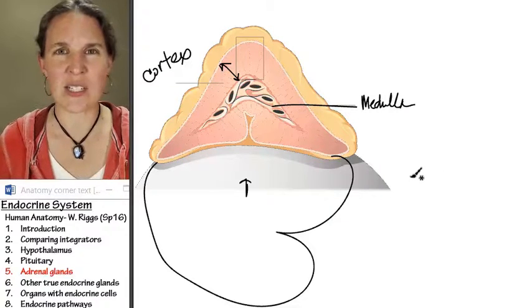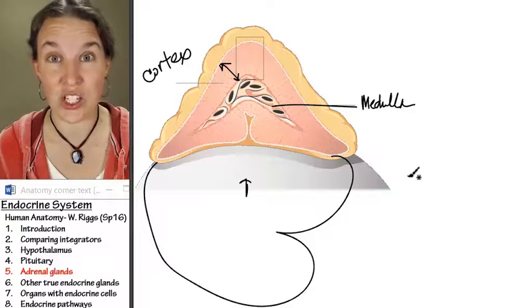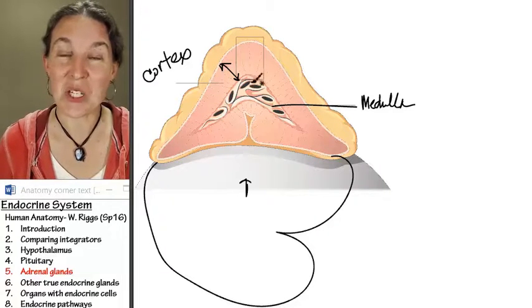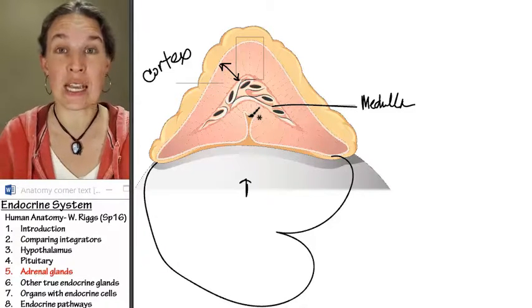is not endocrine tissue at all. In fact, it's actually neural tissue. So, like the pituitary gland, the adrenal gland is both endocrine and neural tissue.